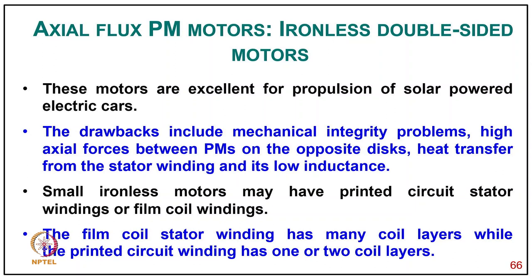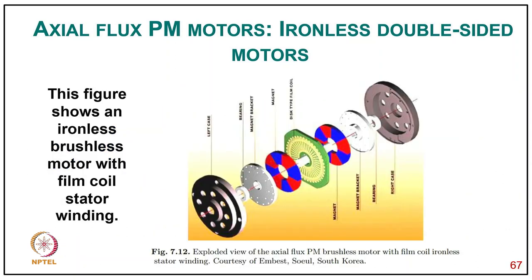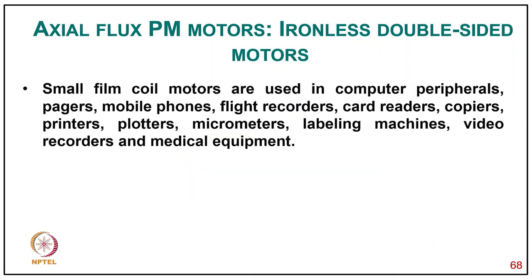Small ironless motors may have printed circuit stator windings or film coil windings. The film coil stator winding has many coil layers, while the printed circuit winding has only one or two coil layers. The ironless brushless motor with film coil stator winding is shown in an exploded view. Small film coil motors are used in computer peripherals, mobile phones, light recorders, card readers, copier printers, plotters, micrometers, labeling machines, video recorders, and medical equipment.